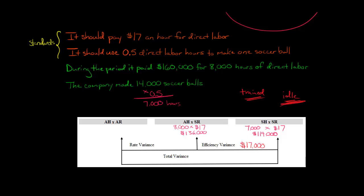So there are any number of reasons why we could have this efficiency variance. The main thing that this is telling us is look, we used a lot more labor than it should have taken us per our standards to make these soccer balls to the tune of $17,000 worth.